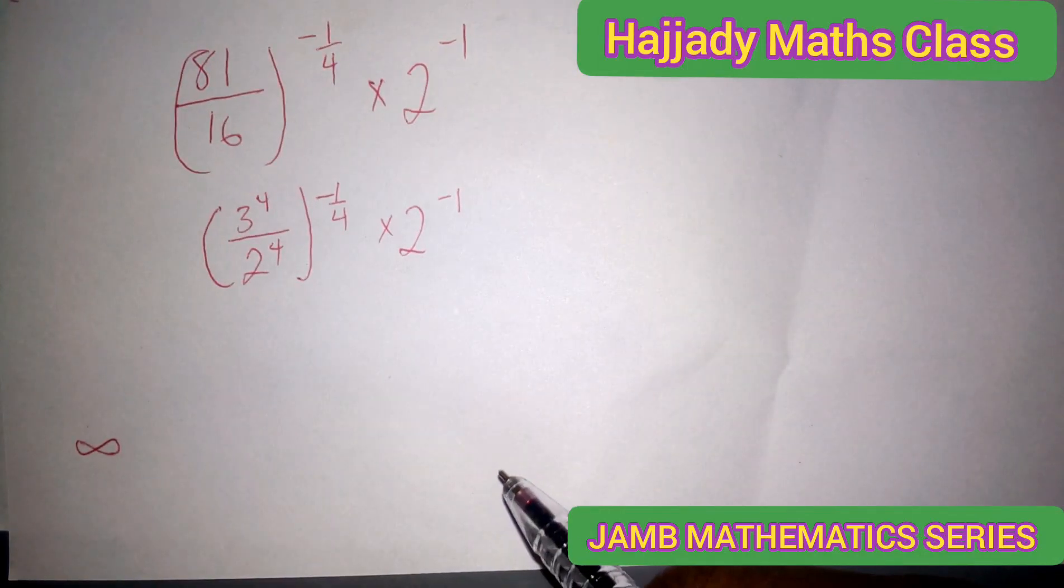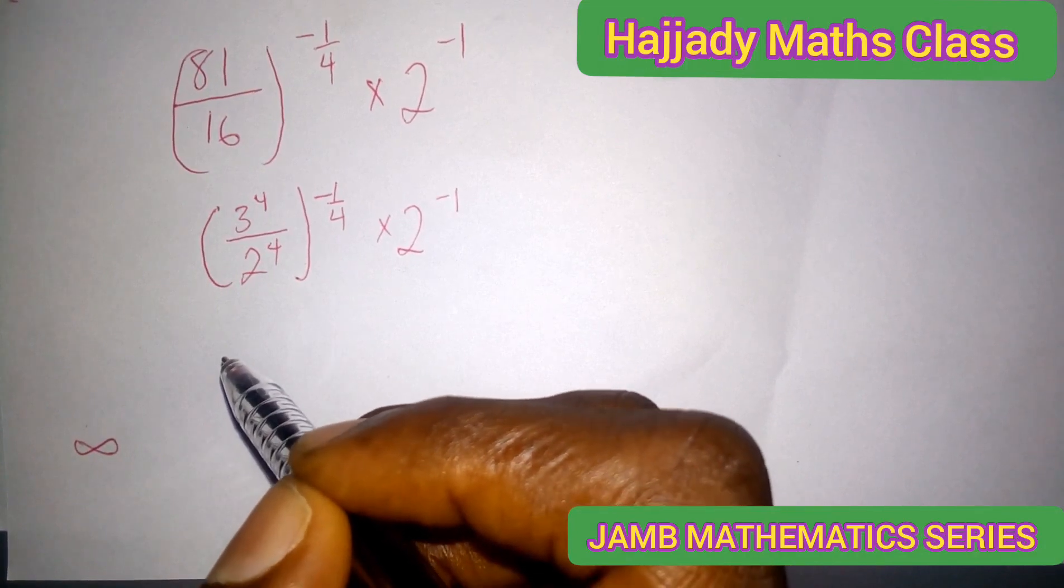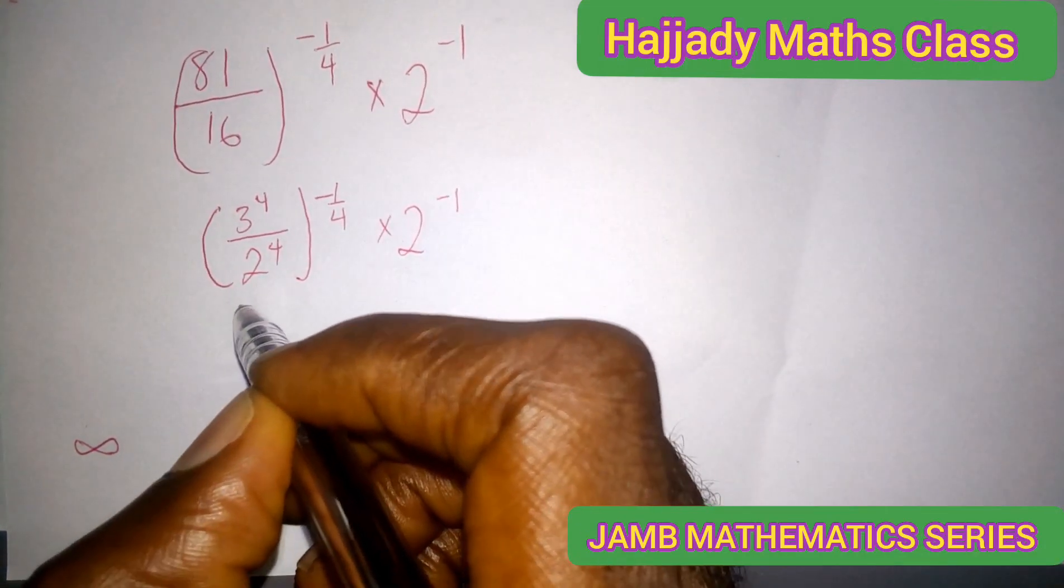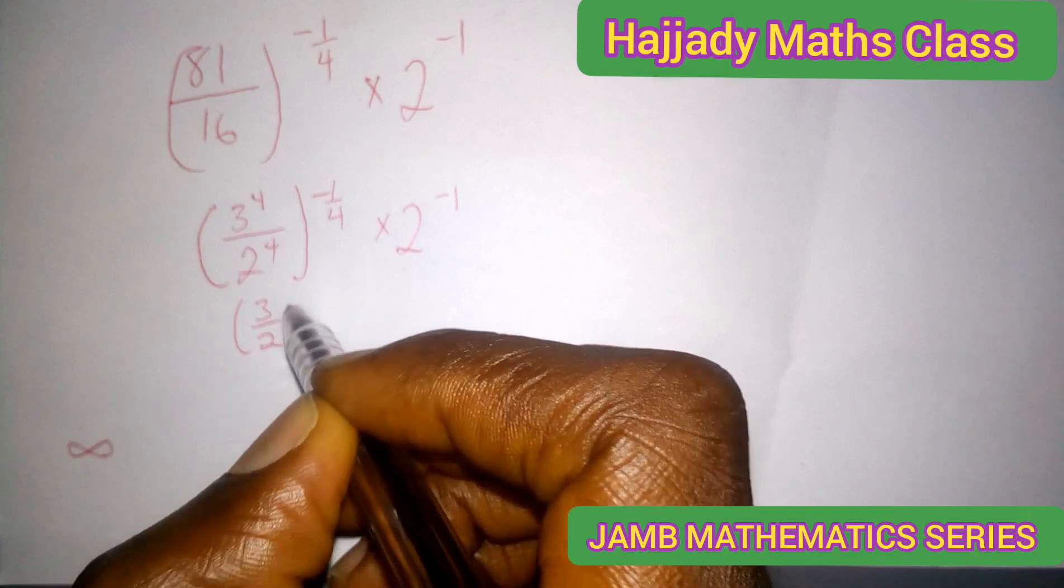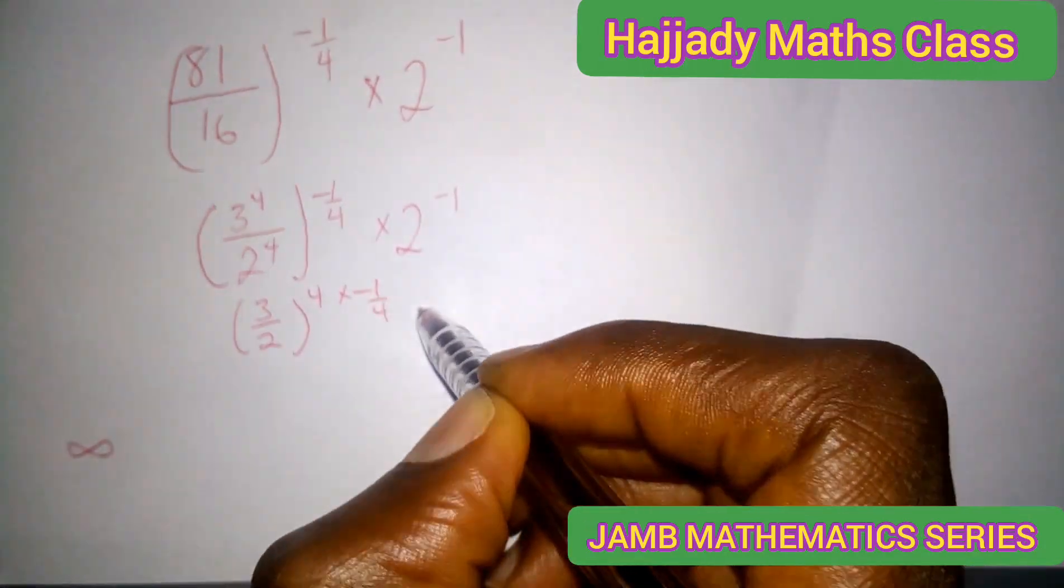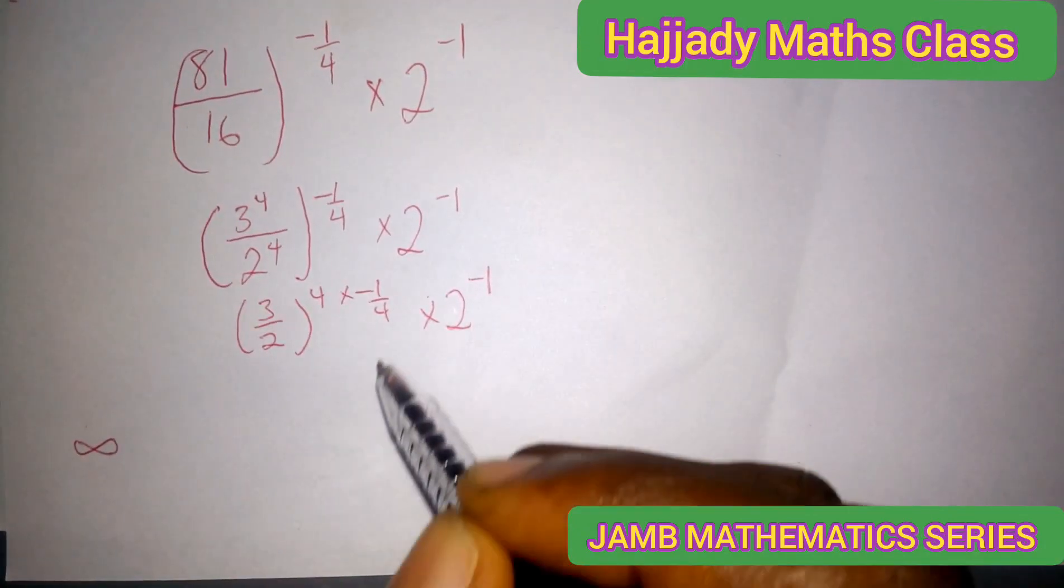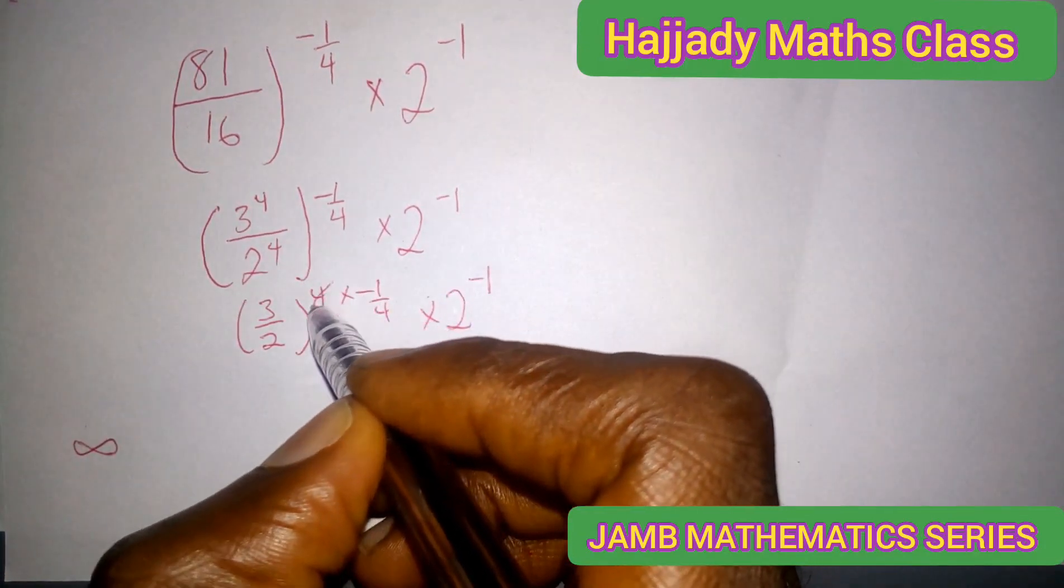And solving this further, we have that since 3 and 2 are having the same power, we have 3 over 2 raised to the power of 4 times minus 1 over 4 times 2 raised to the power of minus 1. And from here, we have 4 cancel out 4.